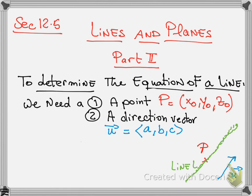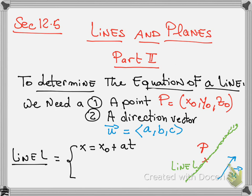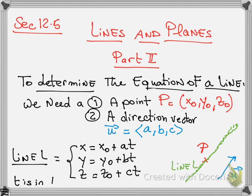The parametric equation of line L is: x = x₀ + at, y = y₀ + bt, z = z₀ + ct, where t is a parameter and t can be any real number.